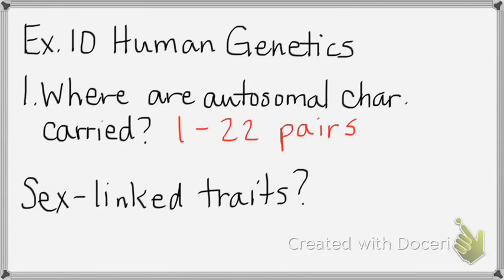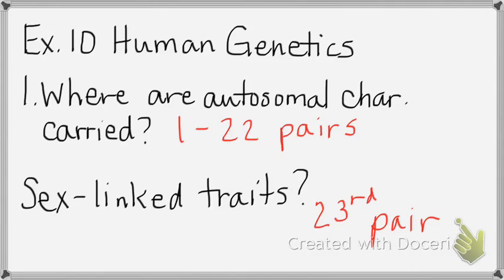Where are sex-linked traits carried on humans? Where are the sex chromosomes? The 23rd pair — that would be the X and the Y chromosomes, or the 23rd pair.